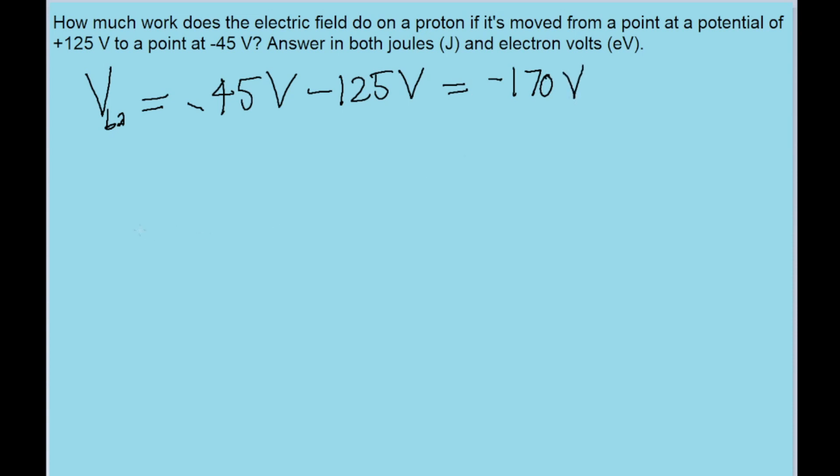Now if we're actually finding the work, we're given a formula that relates potential difference to work and it states that the potential difference between points B and A is equal to negative of the work done through that difference divided by the charge of the particle. So algebraically rewriting this to solve for work, we find that the work is equal to negative Q times the potential difference.